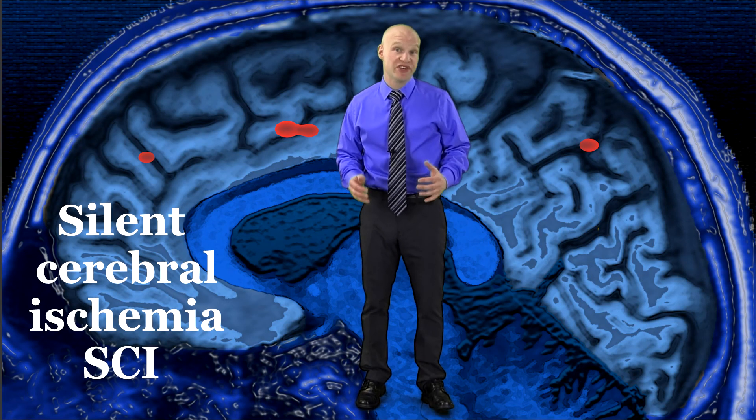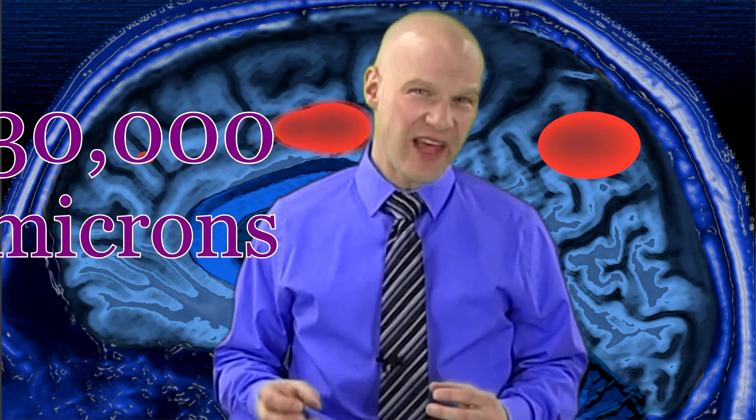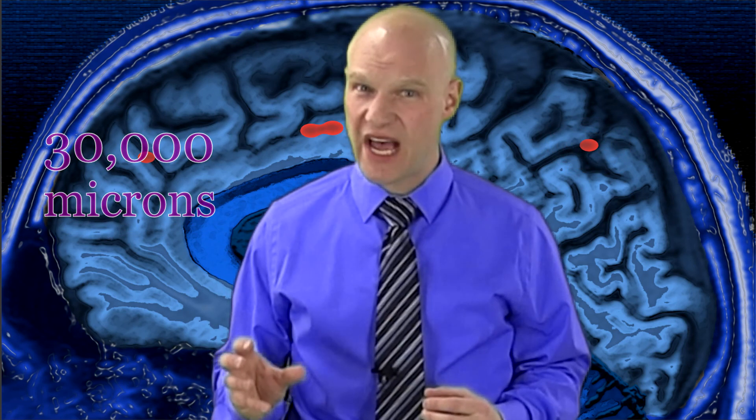Silent cerebral ischemia is where there is damage to the brain that is found. Somebody may have been injured for a different reason. They got in a car accident and a scan of the brain was done, and the damage was found. The person had no idea that they had any damage. They never knew that they had a stroke. When this was studied in the scientific literature, they were able to find strokes as large as three centimeters. Now that's 30,000 microns in size. These are pretty significant-sized damaged areas of the brain that the people had no idea that they even had.